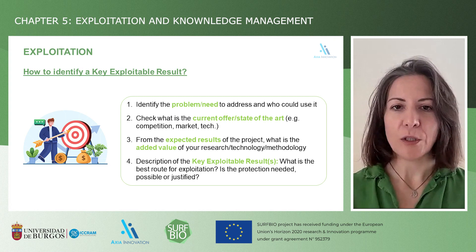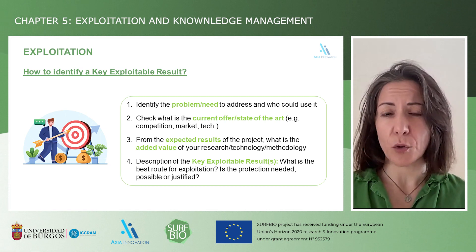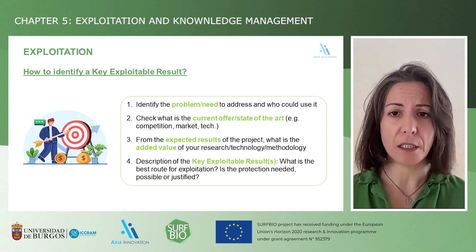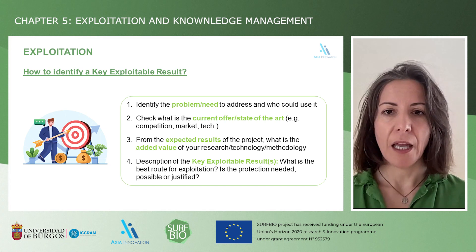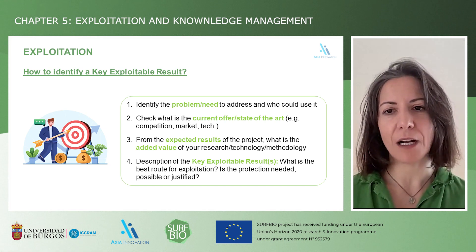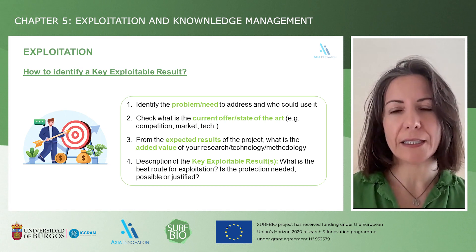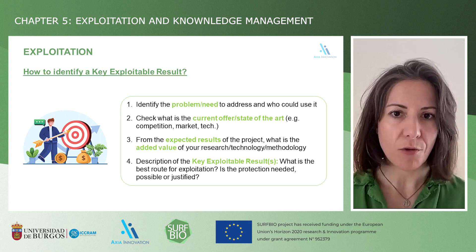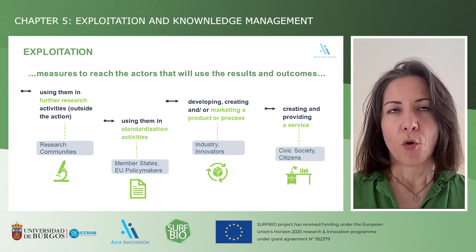How can we identify a key exploitable result? First, we need to address what the problem or need of industry, society or the environment is, and who will be using it. It has to be innovative, so we need a good understanding of the landscape and the state of the art. This will also help identify the added value that the result brings. The description will target the best exploitation route, the need for protection, the ownership of these results, and other relevant information for the specific exploitation plan.